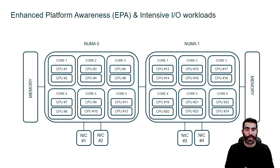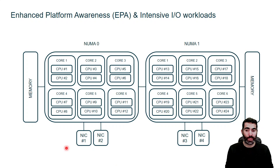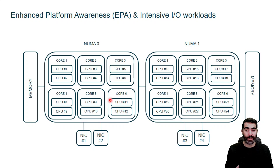I'd like to explain the virtualization of intensive input-output workloads thanks to enhanced platform awareness. On screen I have the representation of a physical server based on two processors that are connected among them and also connected to memory and network interfaces. The motherboard determines these connections, and each processor has six cores. Since we have hyperthreading enabled, we have two CPUs in each one of these cores.